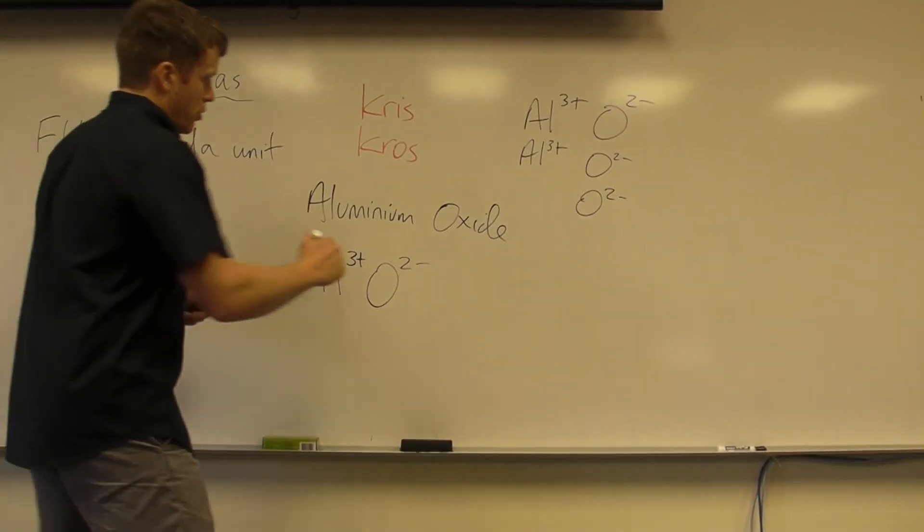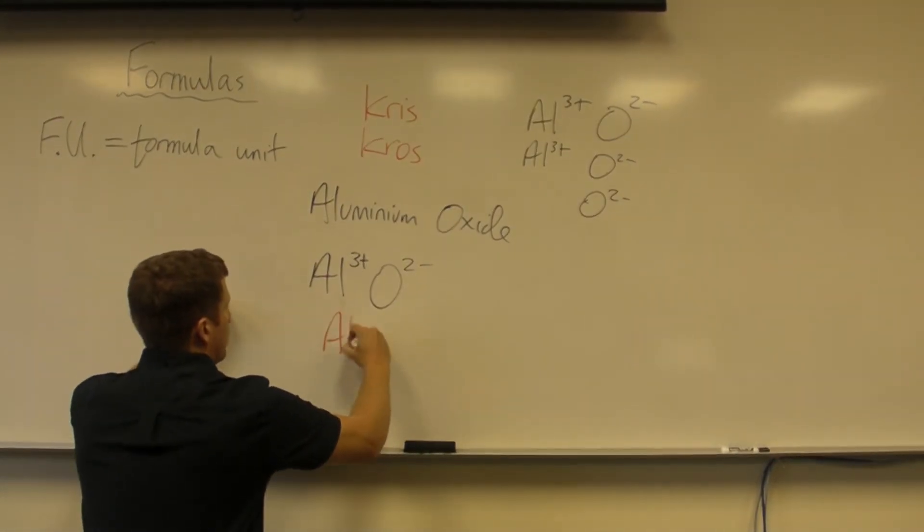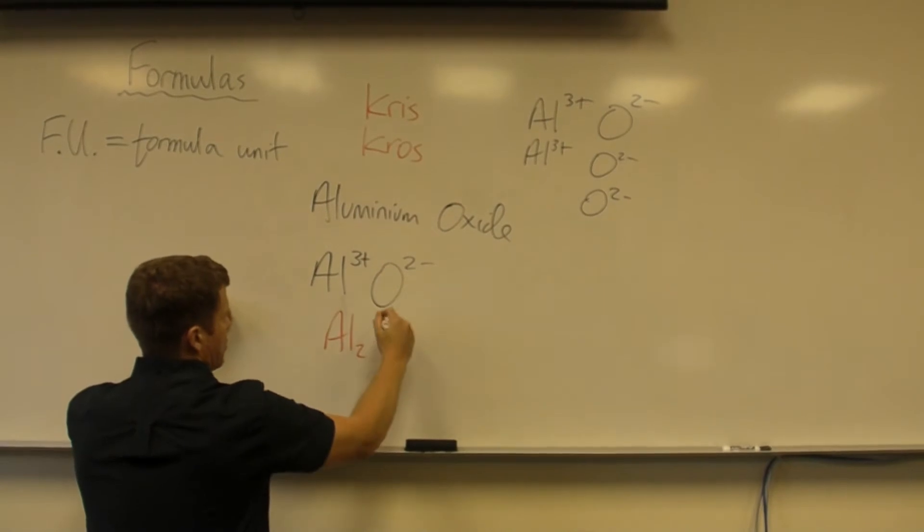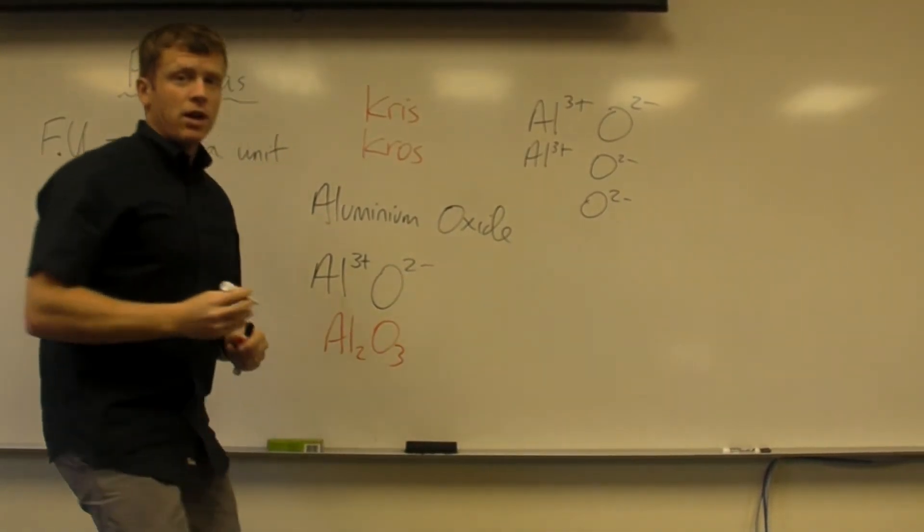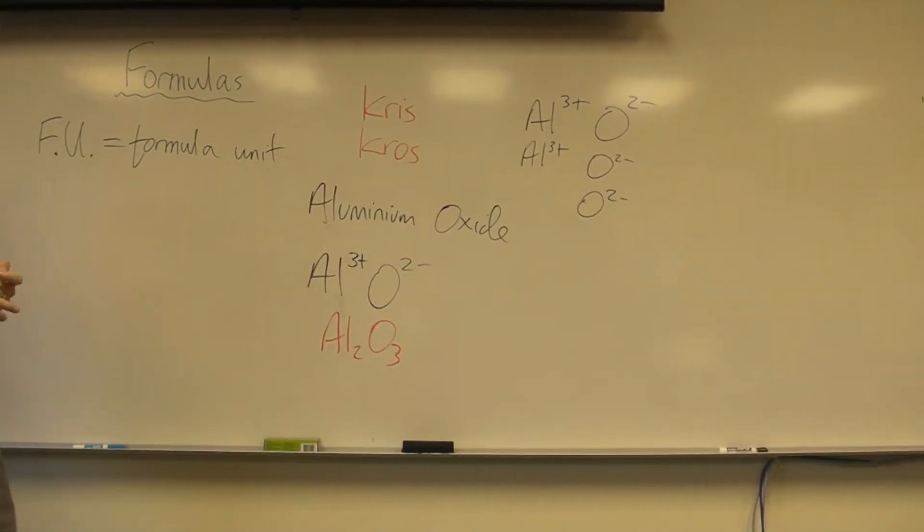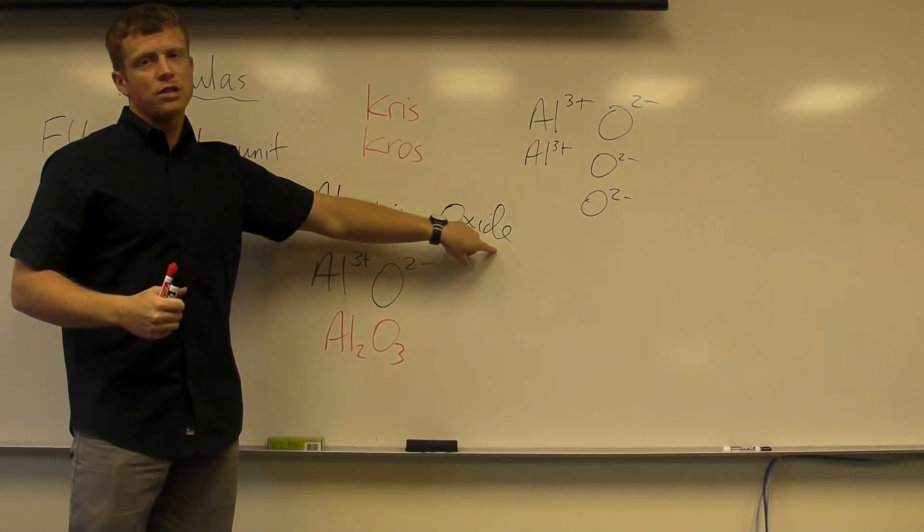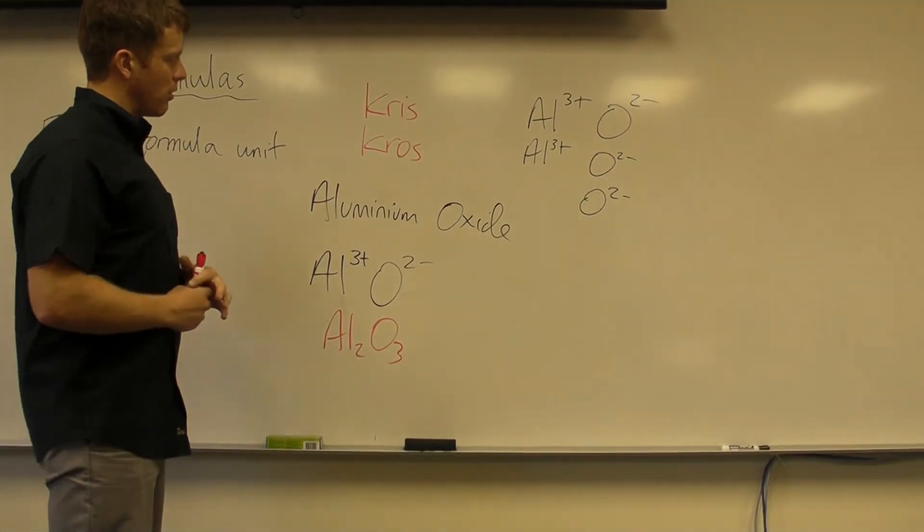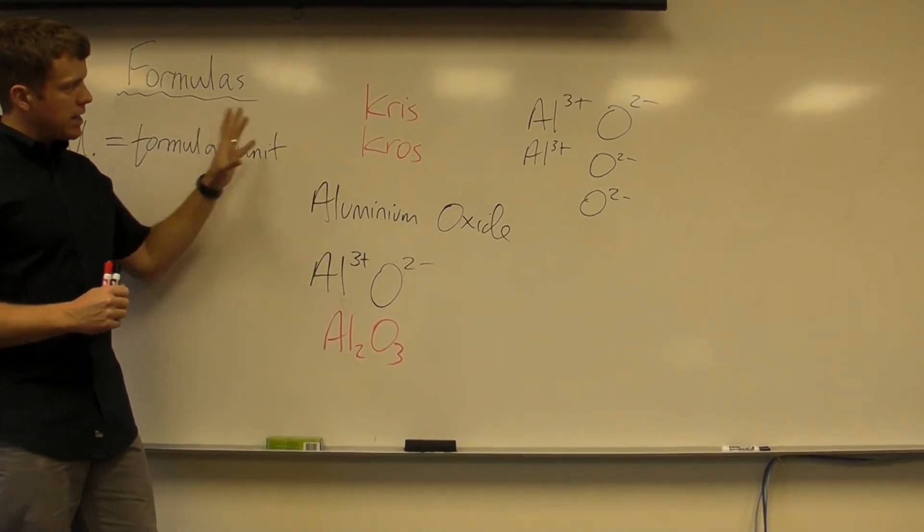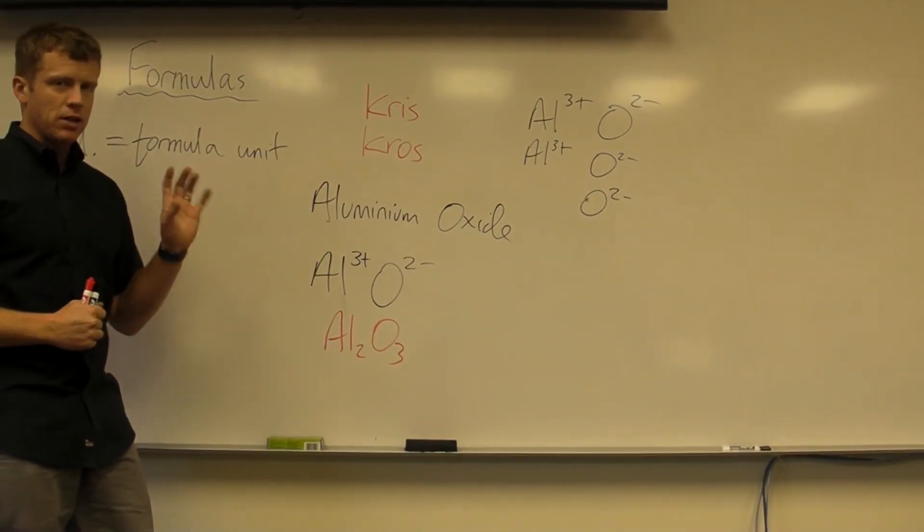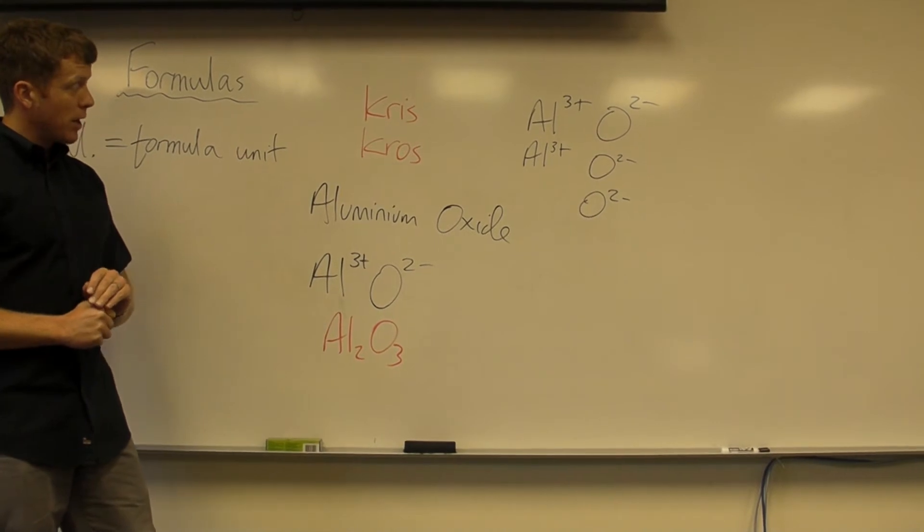The shortcut way is to do crisscross and just bring this two next to the aluminium, and this three next to the oxide, or next to the oxygen. When non-metals bond, the suffix changes. We'll learn more about that later on as well. But just to get an idea of writing the formulas and getting into balancing equations, this is how we're going to get started.